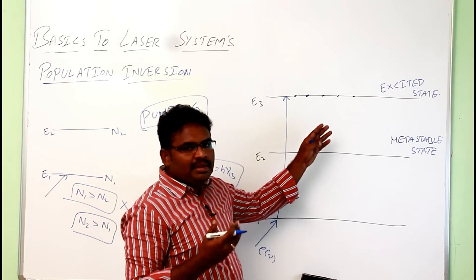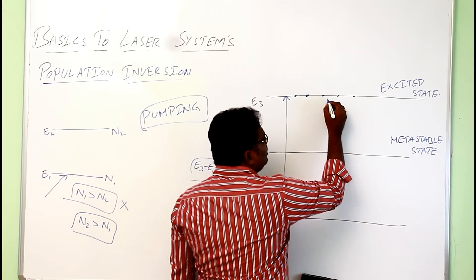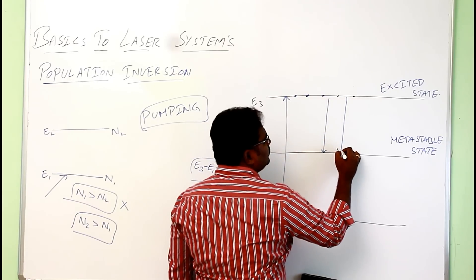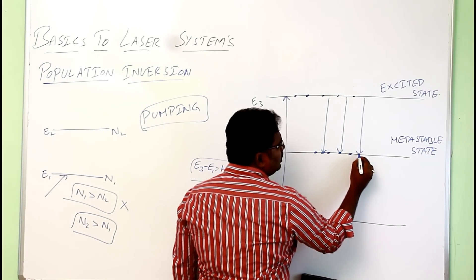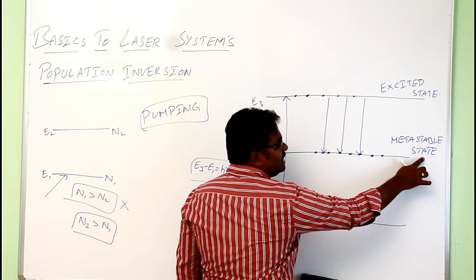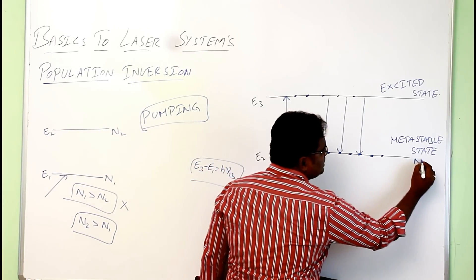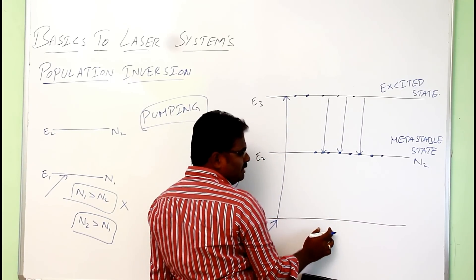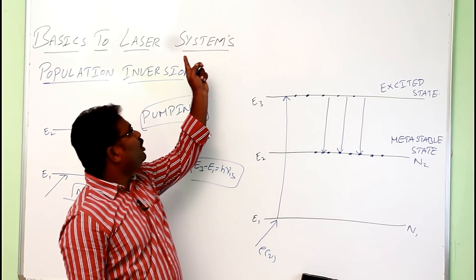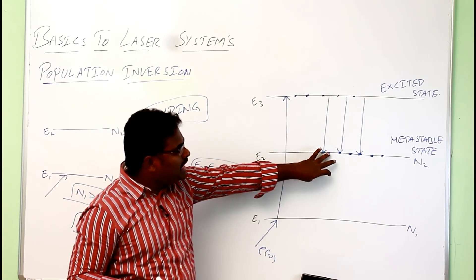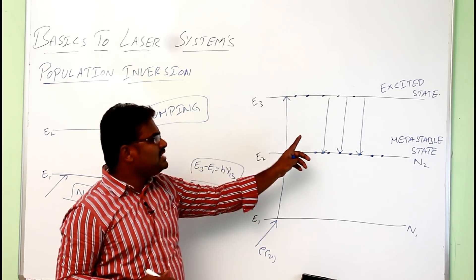Since E3 is not a metastable state, atoms will not spend much time there and will automatically transition to the E2 level by a non-radiative transition. Now we have more atoms present in E2 level because it is a metastable state. The number of atoms in E2 is now greater than in E1 — this situation is known as population inversion.